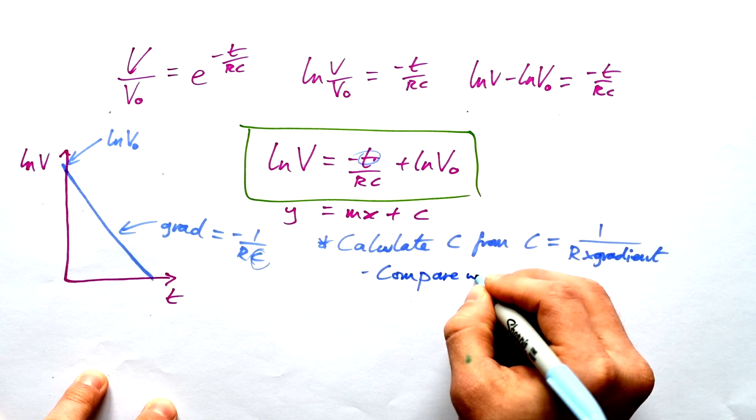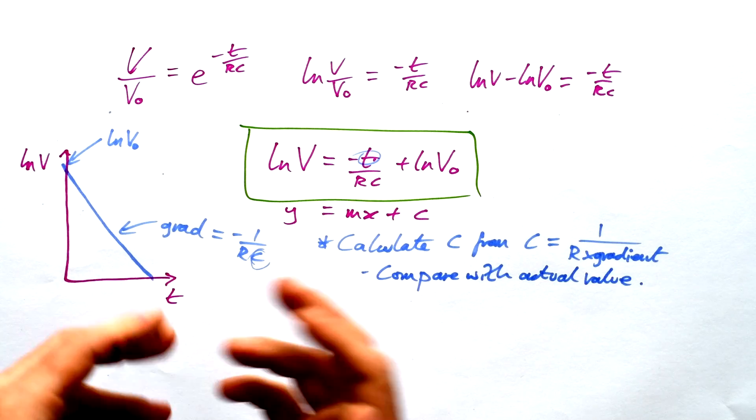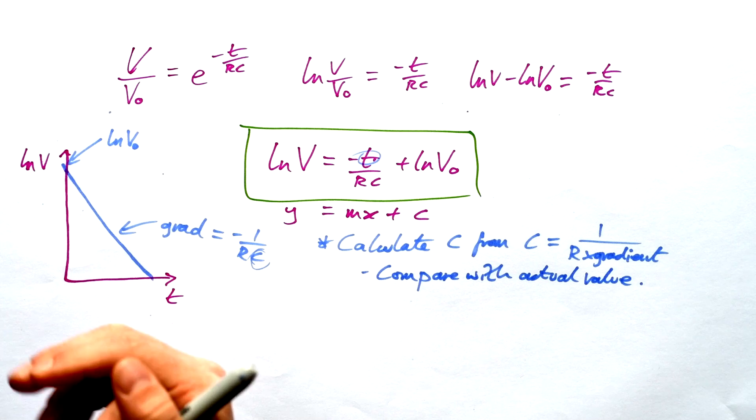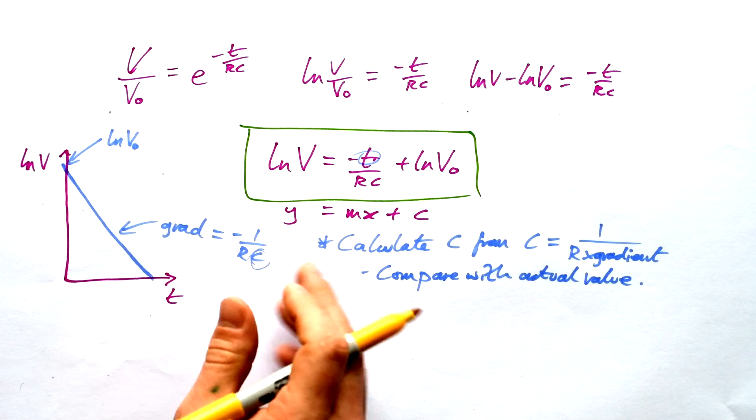And naturally, as per usual, we can compare with actual value. Capacitors usually have a tolerance, so they'll give you a number, but then they'll give you an uncertainty of their own. So you can see whether your value fits inside that. We can do some uncertainties of our own.